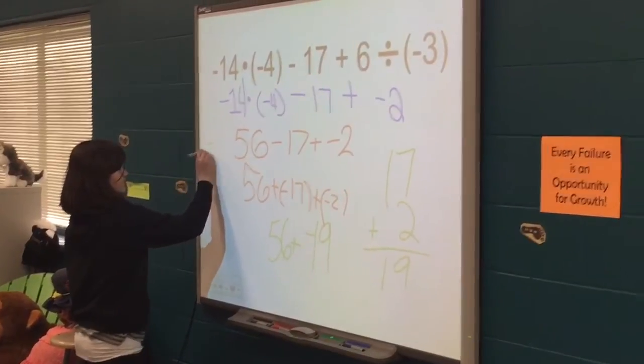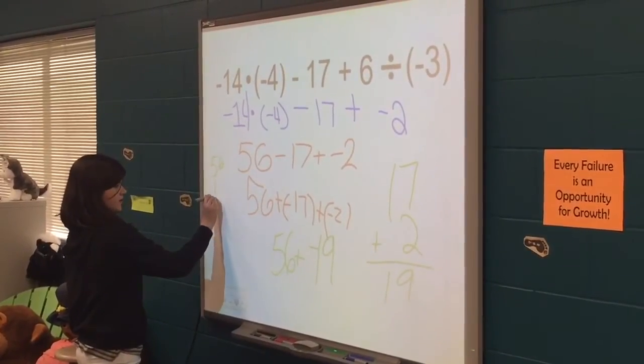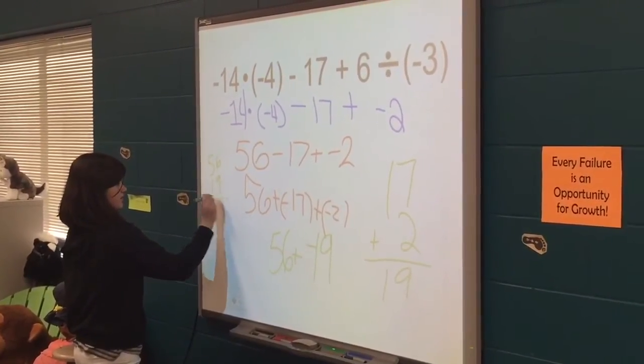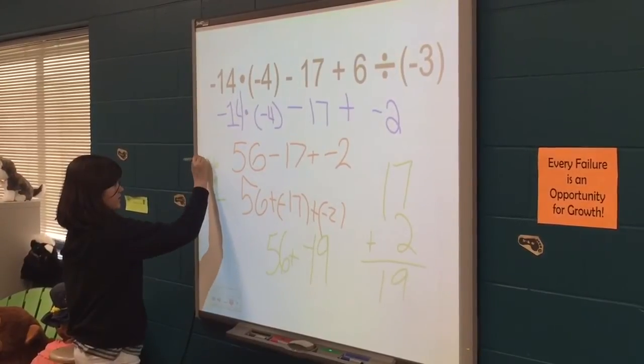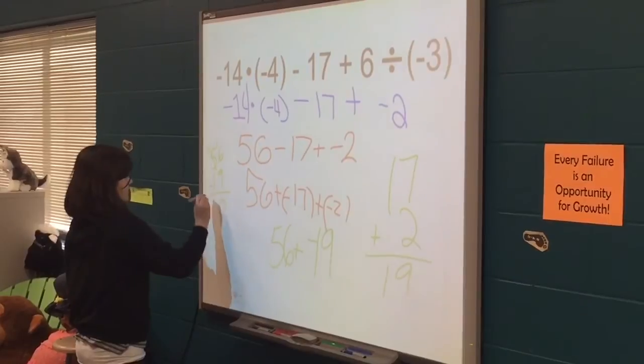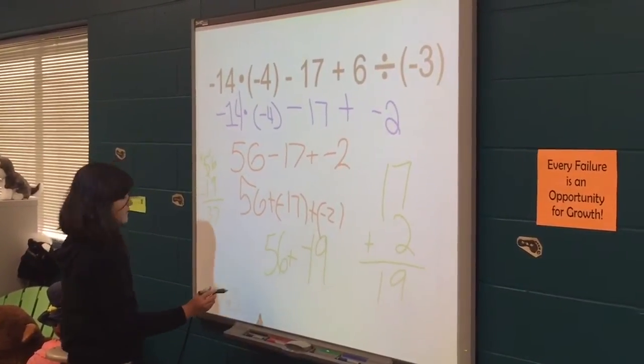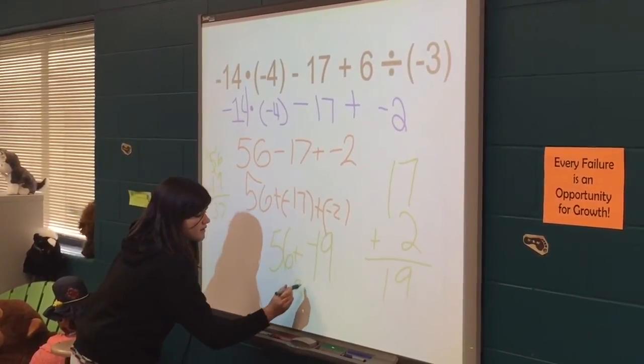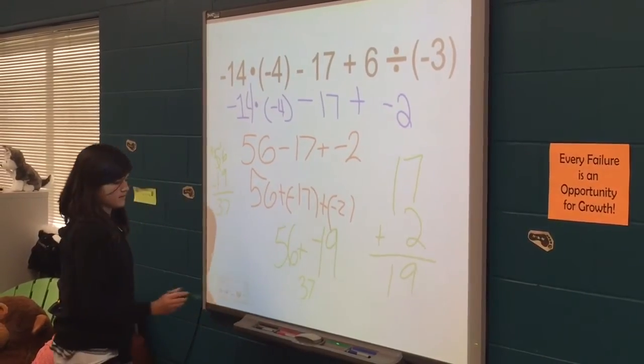So now she's going to take 56 and 19 and add them, and she gets 37. 37 is the answer.